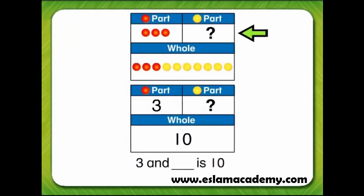Let's put a yellow counter where the question mark is for each yellow counter in the whole. One, two, three, four, five, six, seven.